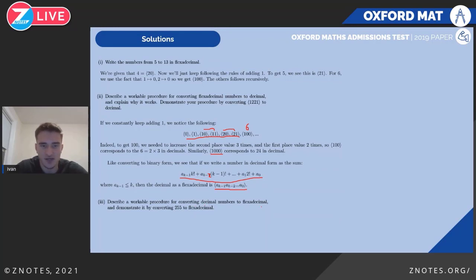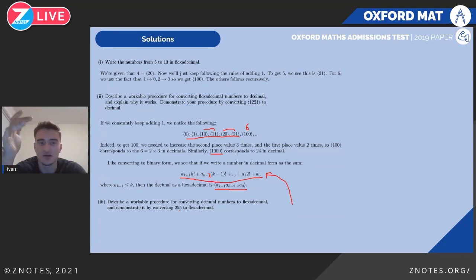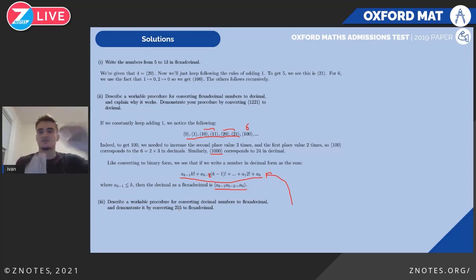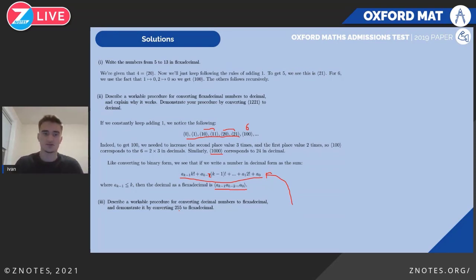This also describes the workable procedure for converting decimals to flexidecimals by inverting it. If I get 255, I find the factorial closest to it — say 120, which is five factorial — multiply it to get 240, giving a coefficient of two in the fifth column of the flexidecimal. You convert it into a sum of this form where each coefficient a_{k+1} is less than or equal to k.